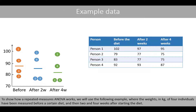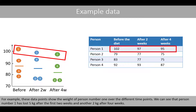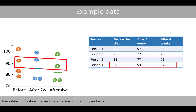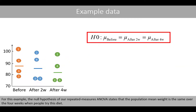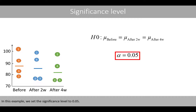To show how repeated measures ANOVA works, we will use the following example where the weights in kilos of four individuals have been measured before a certain diet and then two and four weeks after starting a diet. For example, these data points show the weight of person number one over the different time points. We can see that person number one has lost five kilos after the first two weeks and another two kilos after four weeks. These data points show the weights of person number four and so on. For this example, the null hypothesis states that the population mean weight is the same over the four weeks when people try this diet. In this example, we set the significance level to 0.05.